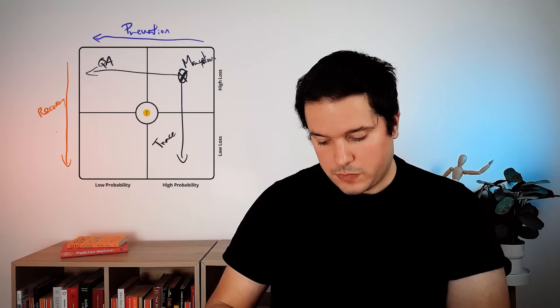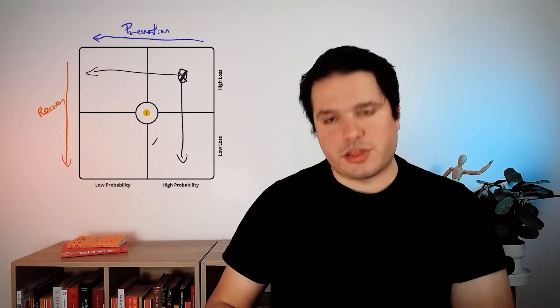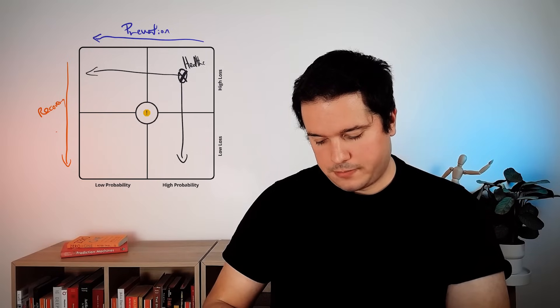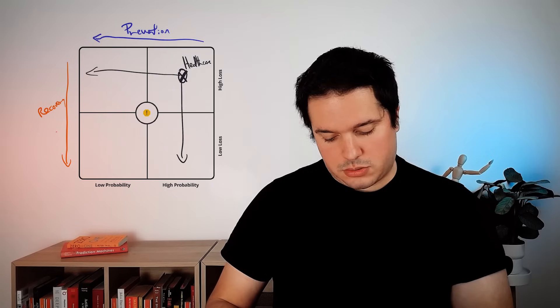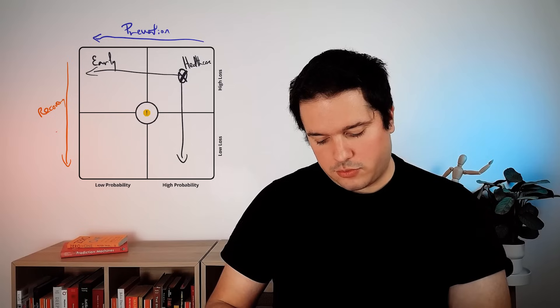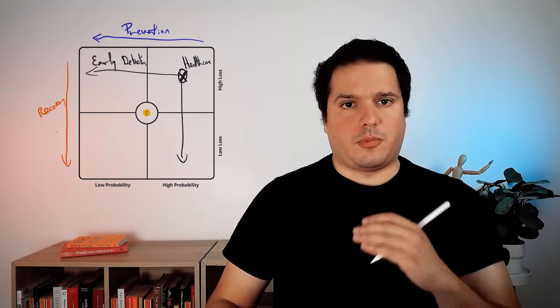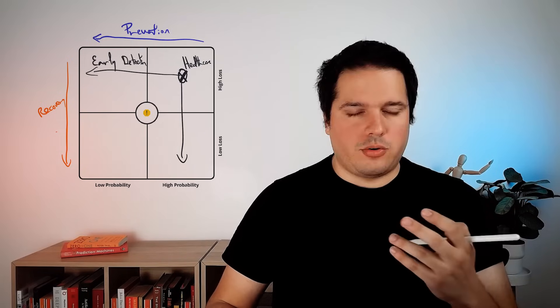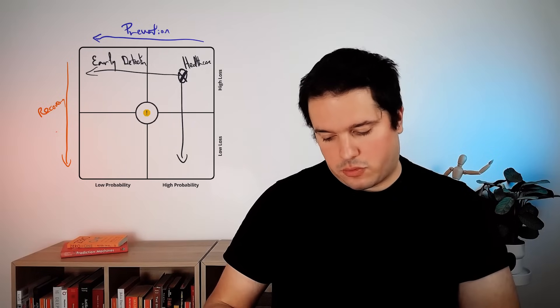Now let's go with, for example, another industry, healthcare. I think healthcare is an industry that everybody relates with. So in healthcare, what is prevention? Basically, it's detecting a disease early on. So early detection. It's basically similar to the quality assurance case. It's early detection of a problem. For example, detecting the disease before it becomes a severe case. Then you can use AI to detect risk factors, to detect a lesion, to detect a lot of things from a patient.